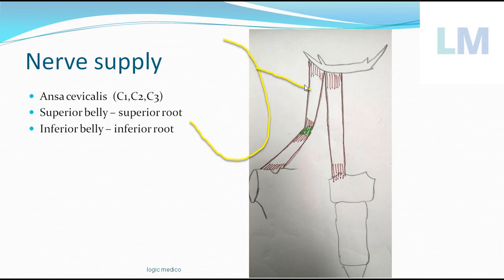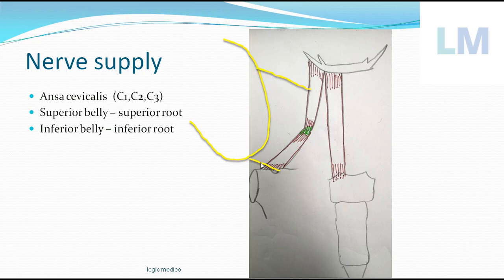The superior belly is supplied by the superior root, meaning it contains only C1 fibers. The inferior belly is supplied by the inferior root — formed by C2 and C3. If you simply say ansa cervicalis C1, C2, C3, the teacher will be more than happy. Fine-tuning: if there is damage to C1, the superior root and superior belly won't work — it will be dysfunctional. If there is damage to C3 segment of the spinal cord, the superior belly still works, but the inferior belly of omohyoid will be paralyzed.